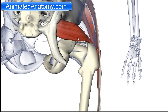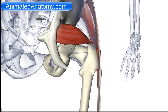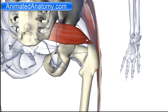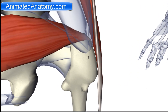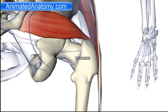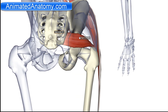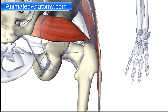Let's start by explaining the piriformis muscle. The piriformis muscle has its origin on the sacrum. The insertion of the piriformis muscle is the greater trochanter. The piriformis muscle is innervated by the nerve to piriformis, which comes from the S1 and S2 nerve roots. Its function is lateral rotation of the thigh, as it belongs to the lateral rotator group.